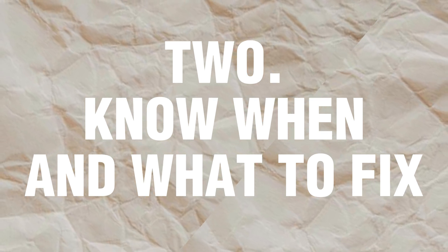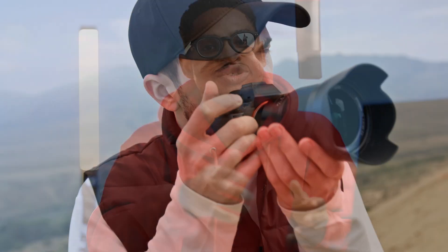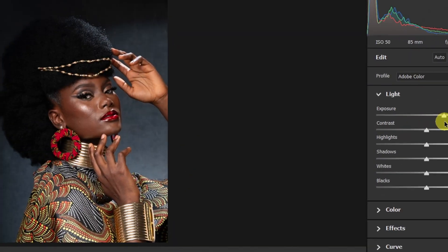Number two: know what to fix and when to fix something on the image you are working on. If you are working on an image that does not require eyes and teeth whitening, you don't have to do it. If you're working on an image that's already sharp, you don't have to add sharpness. Some images already look good straight out of camera — all you have to do is balance the exposure and make the color look good. If you try to add a lot of edits or elements, the image is just going to look over-edited and bad. So just fix what needs to be fixed and leave it like that.